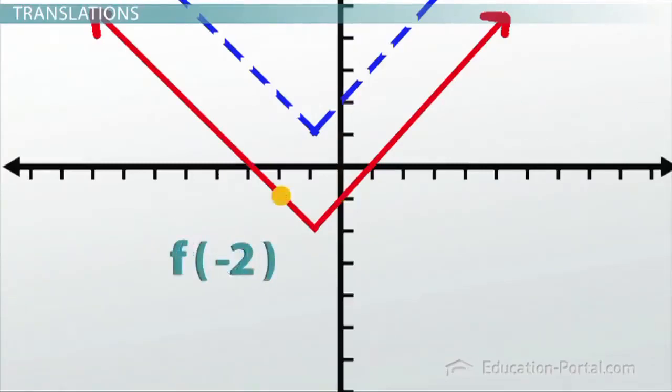we want f of zero plus three. Instead of f of negative two, we want f of negative two plus three. That means that instead of f of x, we want f of x plus three. Cool.